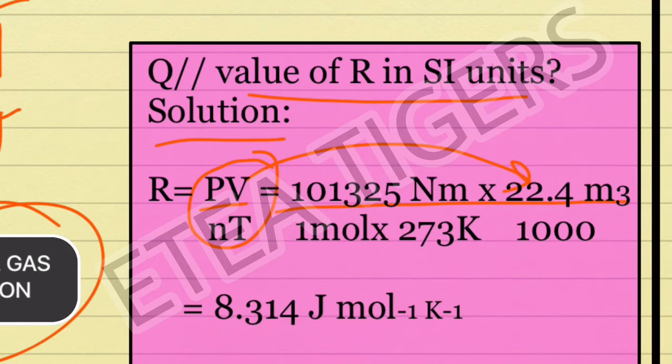And we have 22.4 meter cube. Then we have 1 mole is 273 Kelvin, and this is 22.4 divided by 1000.